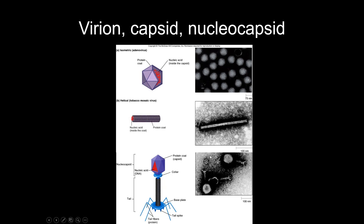A capsid is the protein coat that a virus has — the outside coating of the viral particle or virion. The nucleocapsid is the protein coat plus the nucleic acid inside of it. So the whole structure with the nucleic acid inside is the nucleocapsid.